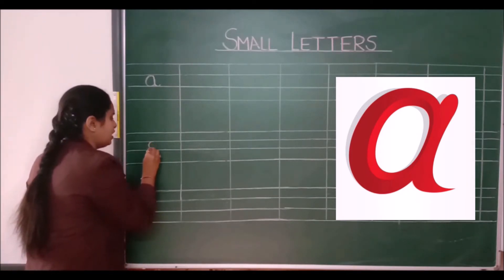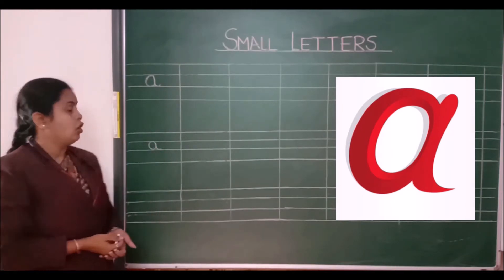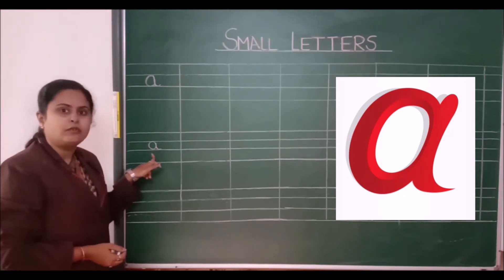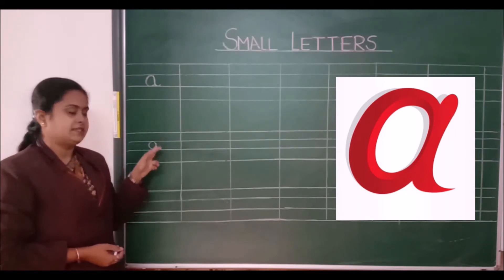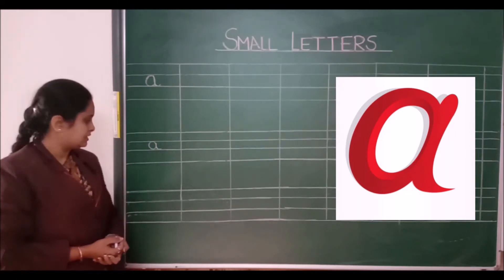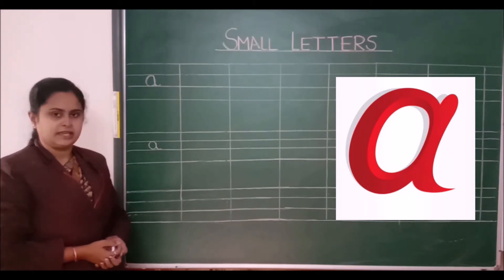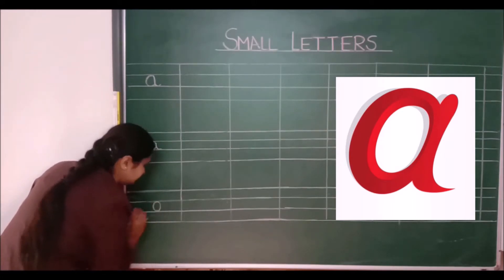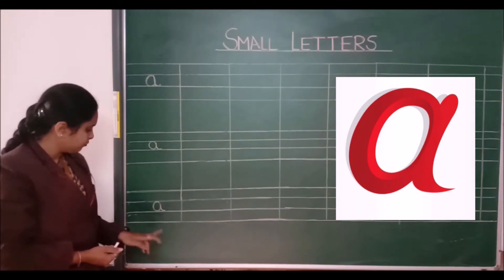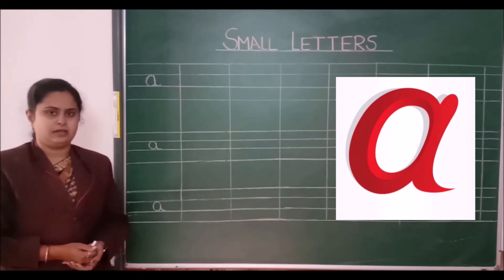Once again, you have to make a circle like this and a small curve like this. Don't touch the fourth line — it will be wrong. This is called letter A. Small A, A for apple.